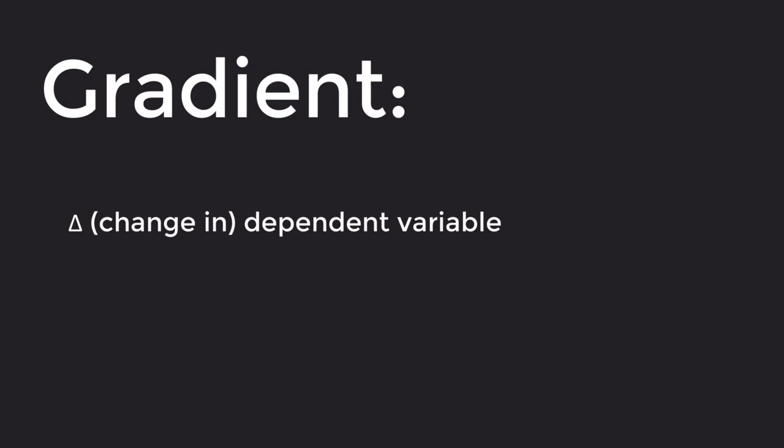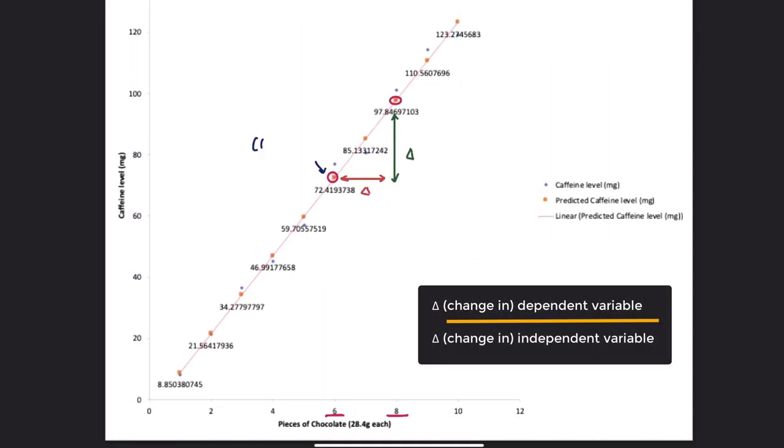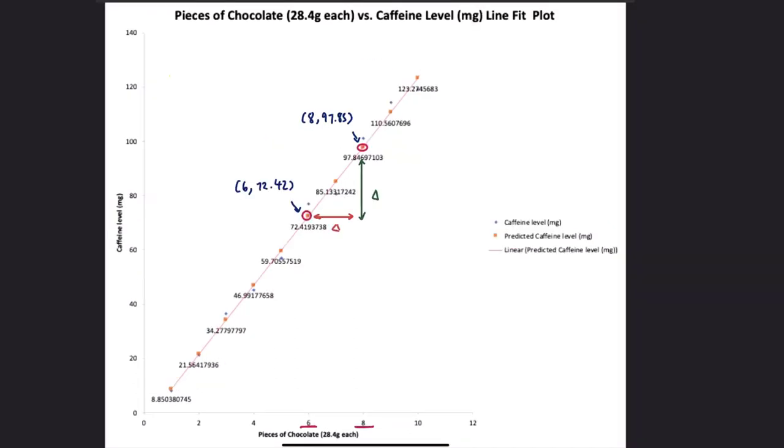We can find the gradient of the line of best fit by change in the dependent variable divided by change in the independent variable. So in our example, we can find the gradient by choosing two orange points. For example, 0.6 pieces of chocolate for 72.42 mg of caffeine, and 8 pieces of chocolate for 97.85 mg of caffeine. So the change in the dependent variable is 25.43 mg of caffeine, and the change in the independent variable is 2 pieces of chocolate. Therefore, the gradient is 12.715 mg of caffeine per piece of chocolate.